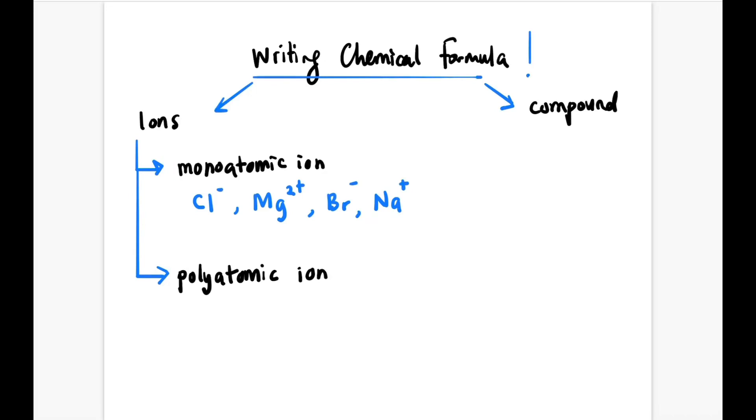But polyatomic ions have more than one atom, like SO4²- - for one SO4²- there are four oxygen atoms and one sulfur atom. Then NO3- has three oxygen atoms and one nitrogen atom, and MnO4- has four oxygen atoms and one manganese atom.